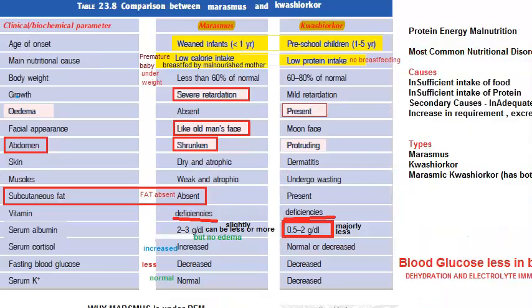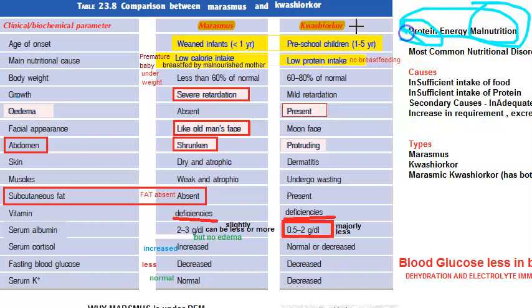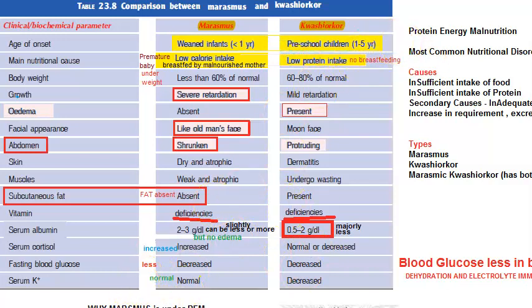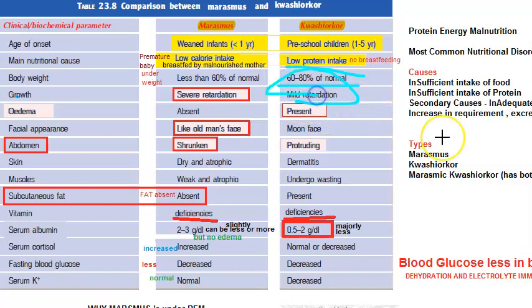We are under the topic of protein energy malnutrition — malnourishment where the body is not getting what it needs. In Kwashiorkor, it is mainly protein that is not there. This is the most common nutritional disorder in developing countries. Kwashiorkor affects children aged one to five years — a slightly bigger child — who is eating but getting less protein. The weight of the child will be around 60 to 80 percent of normal, with mild growth retardation.